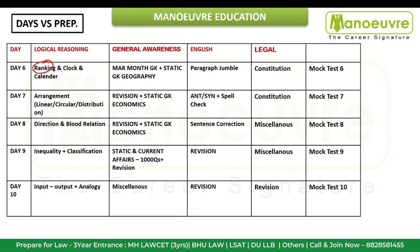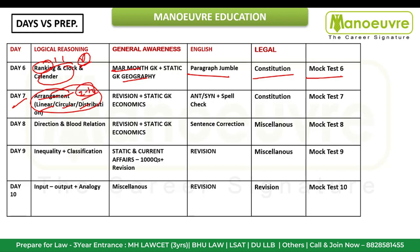That was the first 5 days plan. Please pause the video and go through the timetable. Day 6: Ranking, clock and calendar — expect 1 to 2 questions from here. March month current affairs. Geography, static GK, paragraph jumble, constitution, mock 6. Day 7: Arrangement — linear and circular distribution. Watch the video and go to the sitting arrangement topic in Manure's e-books. Solve all the sets given there at least 2 times without fail. Roughly 5 to 10 questions can come from here in the exam.